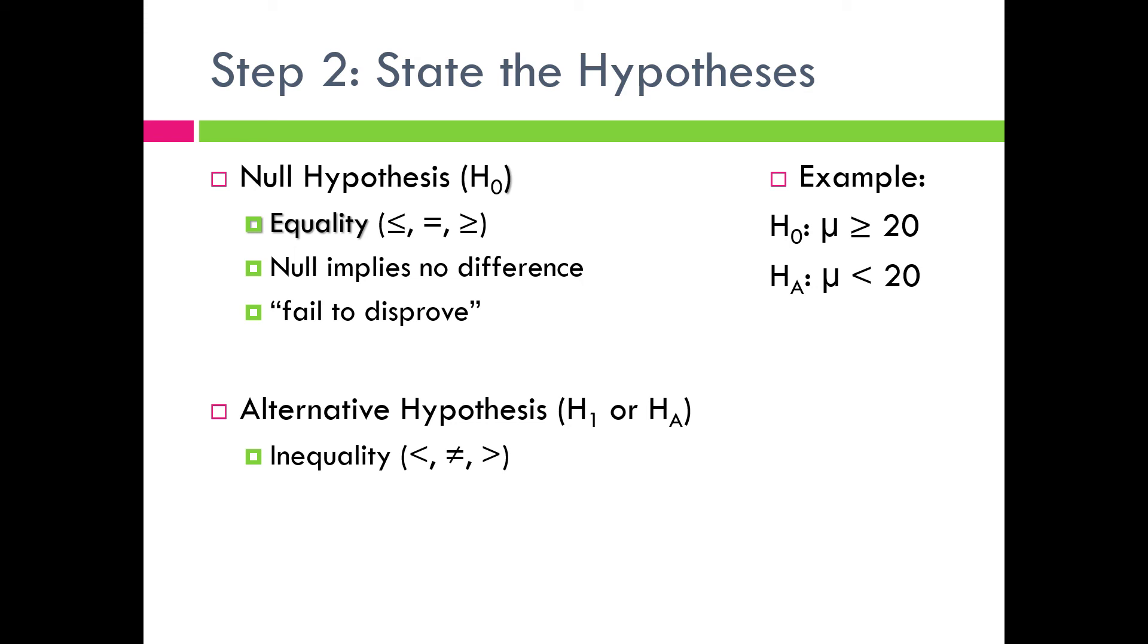So H sub zero could be μ is greater than or equal to 20. Maybe we're looking at age, for example, and we're looking at incoming students at a local college, and we believe that the average age of incoming students is under 20. Well, if I had that that I was evaluating, I'd be looking at H sub A, μ is less than 20. We want to check to see if the average age is actually under 20. And then H sub zero, I'm just using the complement rule of that, and that would be the average age is at least 20, so 20 years of age or older. We'll get to writing hypothesis statements for a given scenario a little bit later on.